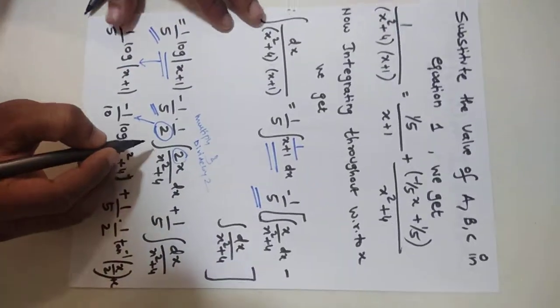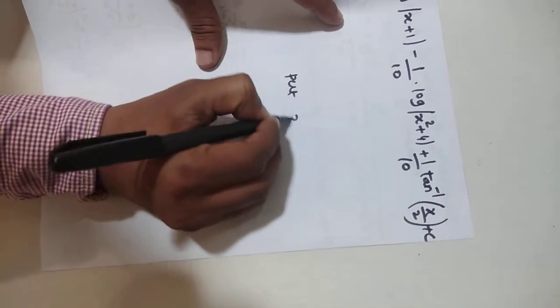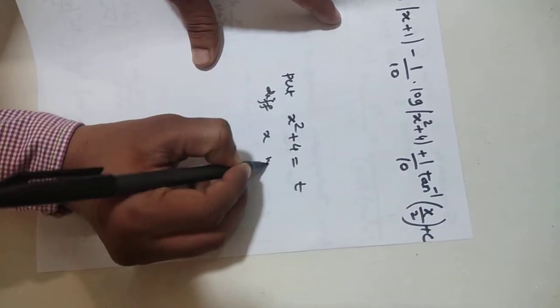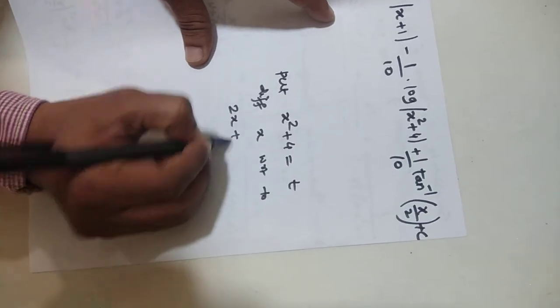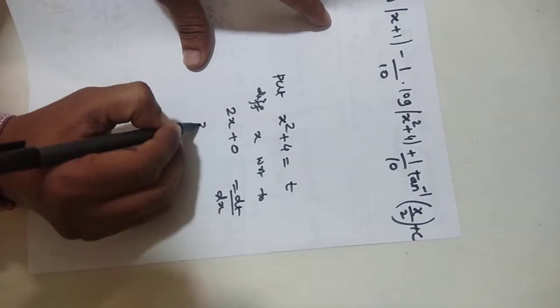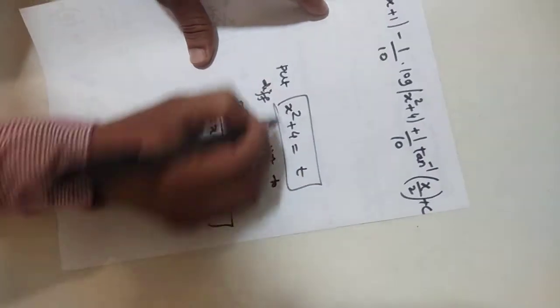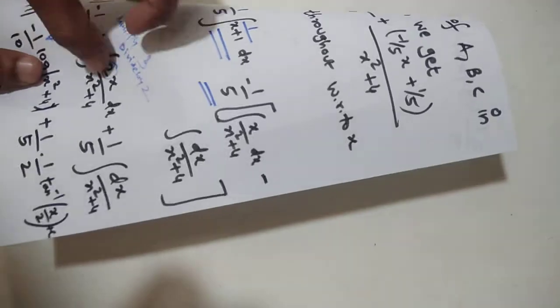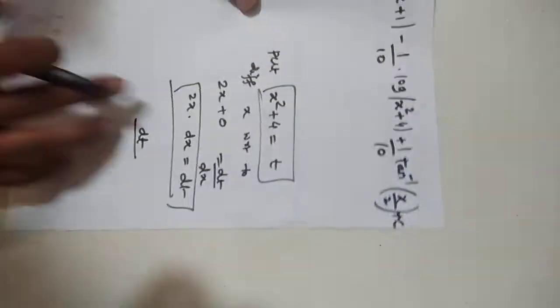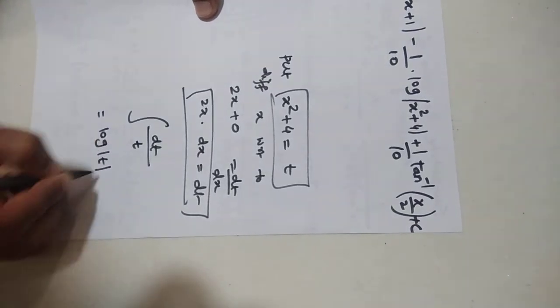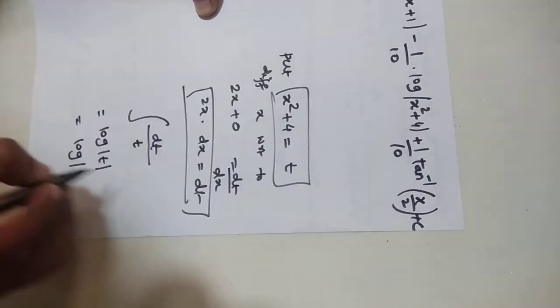For the substitution, let x² + 4 = t. Differentiating: 2x dx = dt. So the integral of 2x dx/(x² + 4) becomes the integral of dt/t, which equals log|t| = log|x² + 4|. This is why we write log(x² + 4) directly.